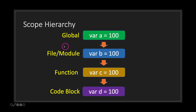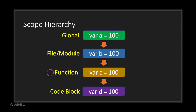Looking at the file module class, we've created variable B. Within our file module we have access to everything in the global scope including variable A. So while in the file module we have access to variables A and B, we do not have access to variables C and D. As we move down, our access to variables expands.